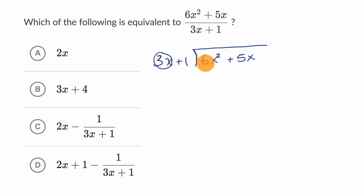how many times does it go into six x squared? Well, three x goes into six x squared two x times. And so we write that in the first degree space here. So two x and then two x times three x is six x squared. And then two x times one is equal to two x.